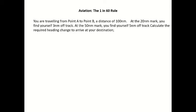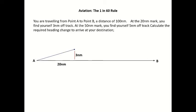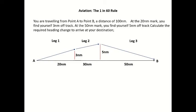Next example, getting a little bit more complex — and this is probably about as complex as what the CASA exam will give you. You're travelling from point A to point B, a distance of 100 nautical miles. At the 20 nautical mile mark you find yourself 3 nautical miles off track. At the 50 nautical mile mark you find yourself 5 nautical miles off track. Calculate the required heading change to arrive at your destination. Draw the question out: our first measurement mark is the 20 nautical mile mark, 3 nautical miles off track; our second is the 50 nautical mile mark, an additional 30 nautical miles along course, and we're now 5 nautical miles off track. Three legs total: leg 1, leg 2, and leg 3.